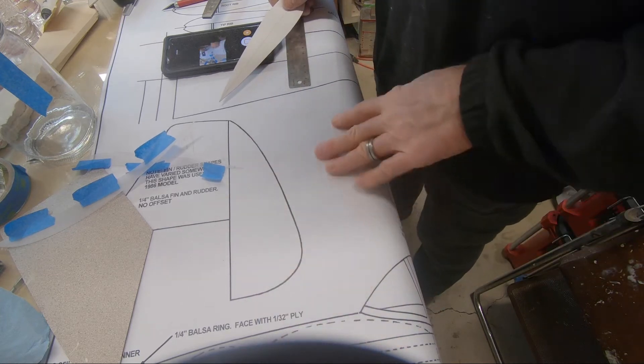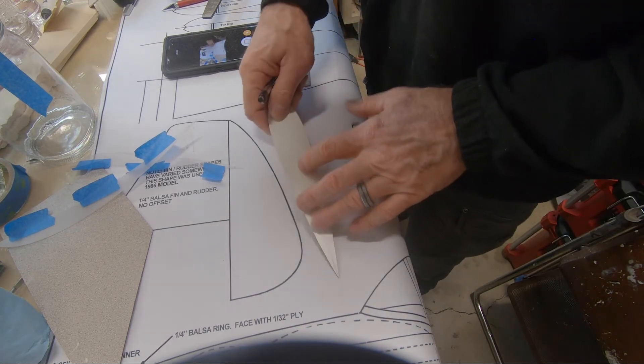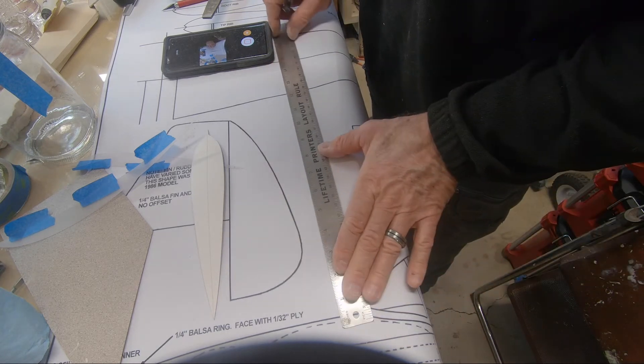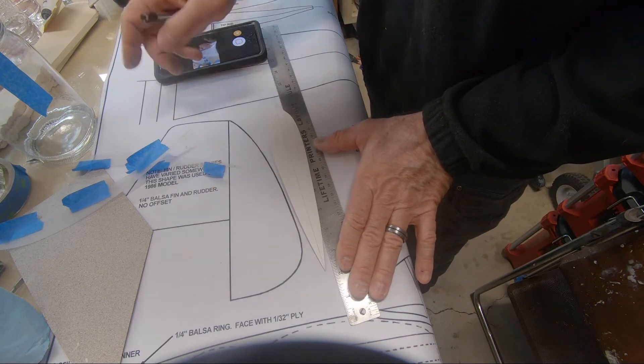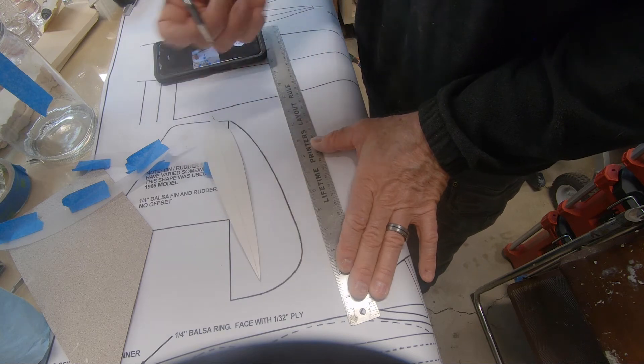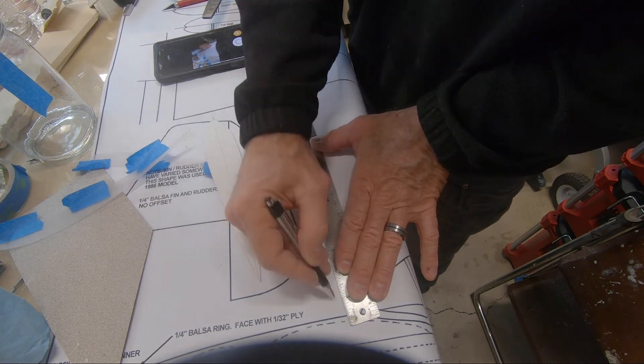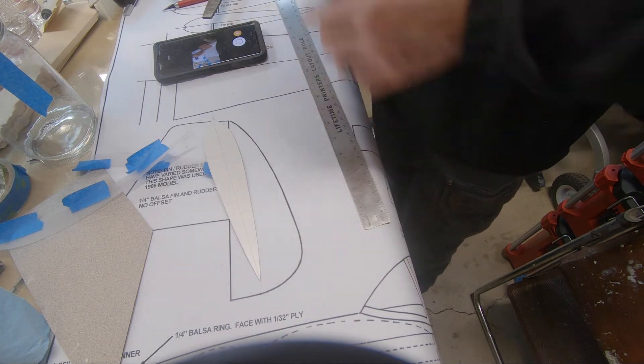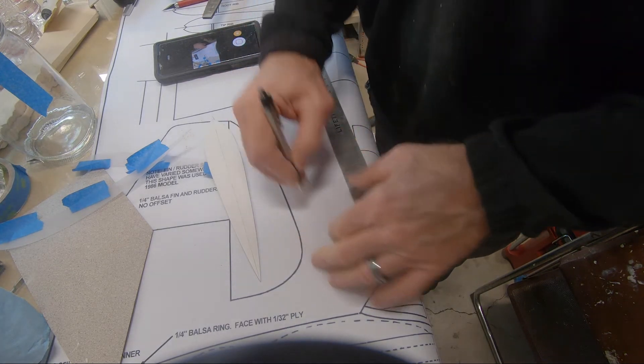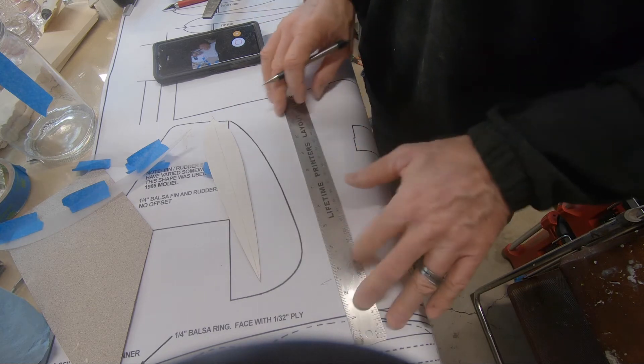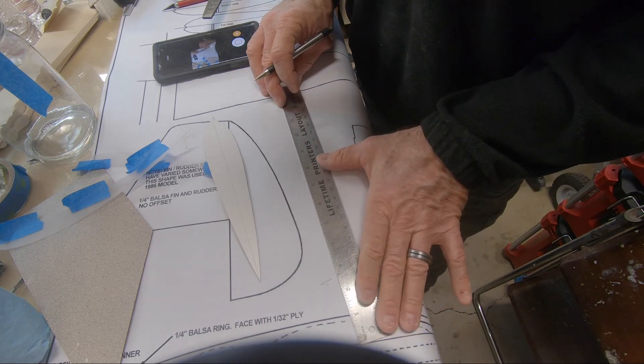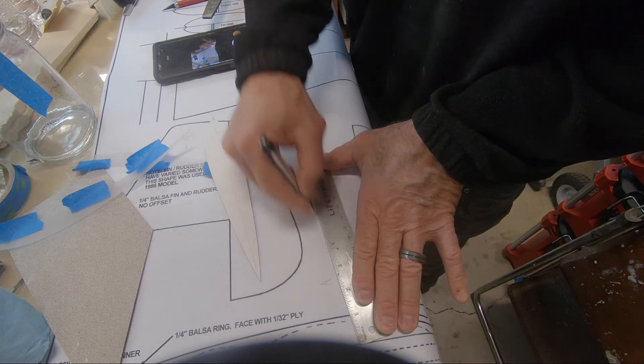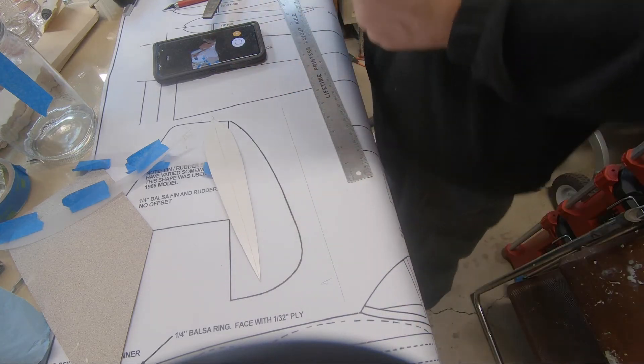So here's how I check the symmetry of this template. The first thing I do, just use the plan here. I'm going to draw a straight line. Get my ink going here. Okay, there's my straight line.